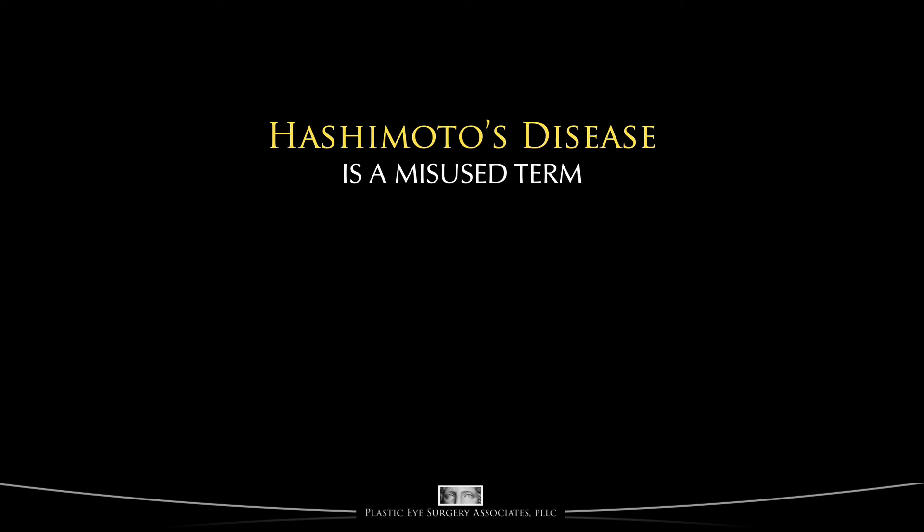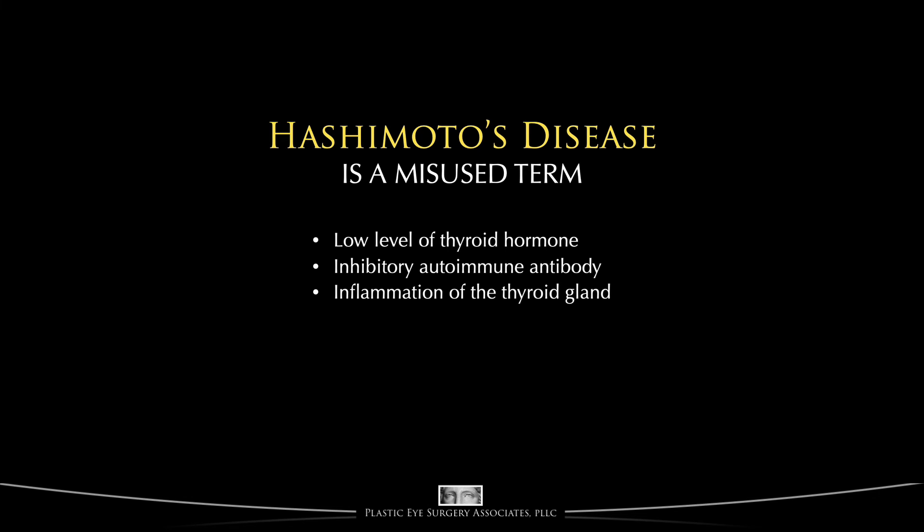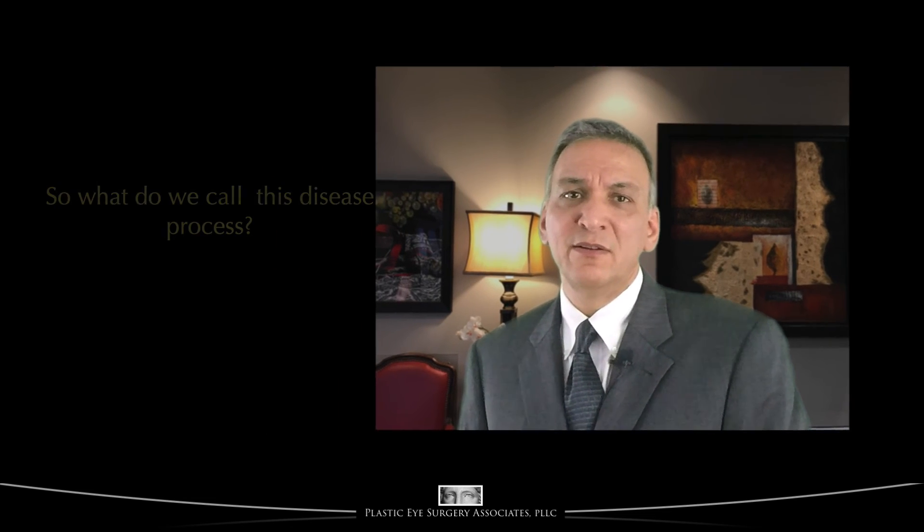Similarly, Hashimoto's disease is also an often misused term. Some use it to mean a person has a low level of thyroid hormone; others may mean a measurable inhibitory autoimmune antibody; others mean an inflammation of the thyroid gland. Many people are told they have both Graves' and Hashimoto's. All in all, Hashimoto's disease is another term we are better off no longer using. Over the last several decades, many terms have been used and eventually discarded. Today, people use the internet to research these topics, and it is sometimes difficult to know whether various names such as endocrine orbitopathy and Graves' disease actually refer to the same disorder or not.